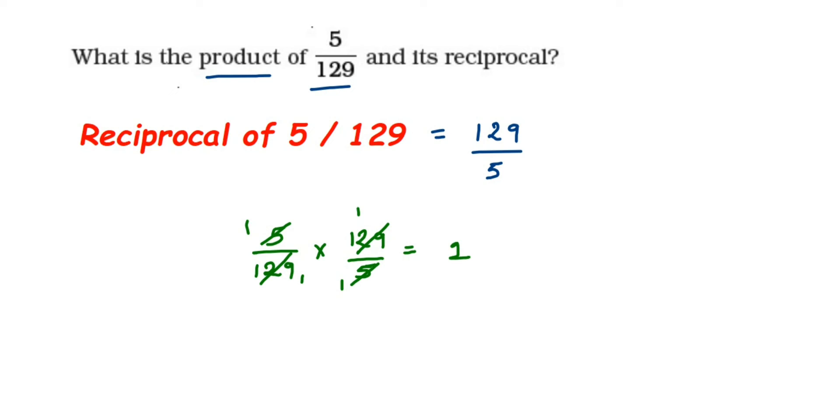You can check with another example. Suppose you have 2/3 and you're multiplying it with its reciprocal. The reciprocal of 2/3 is 3/2, so the numbers will cancel and you'll get 1. Whenever you're multiplying a number and its reciprocal, your answer is always 1.